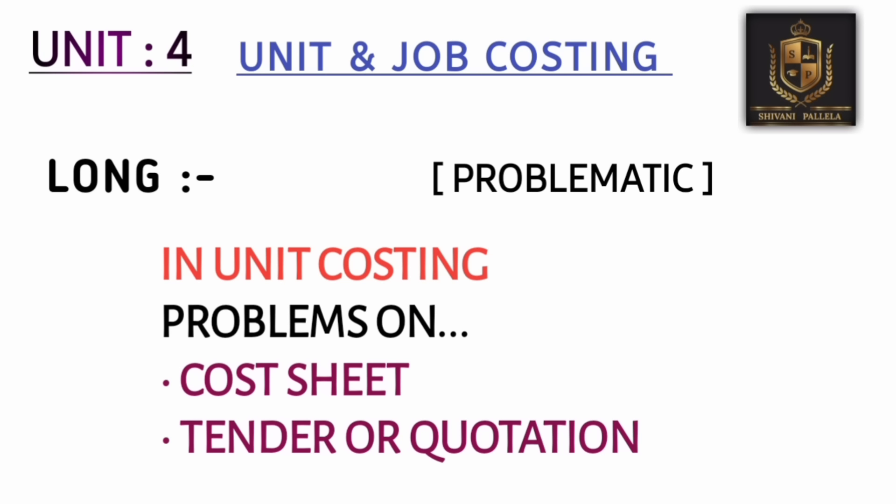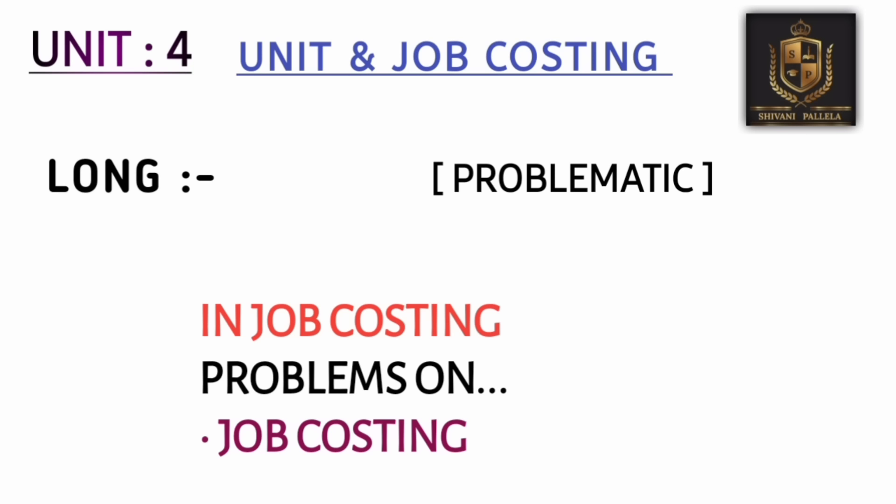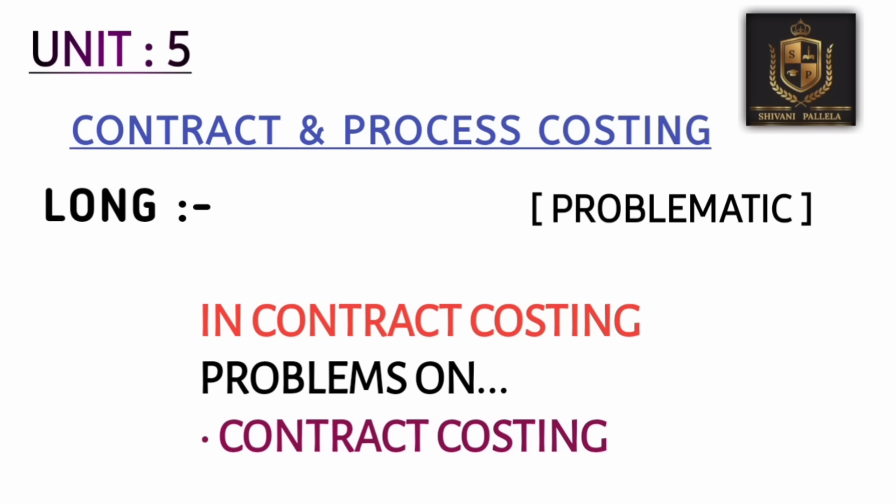In unit four, for the long answer from Unit Costing, you can expect a Cost Sheet or Tender/Quotation question as the problematic — this is the most important. Unit four has two chapters: Unit Costing and Job Costing. If you are perfect with Unit Costing, you will automatically understand Job Costing because they are interlinked. Compared to Job Costing, Unit Costing is more important. Many students find theory-only questions in Job Costing, so it's better to focus on Unit Costing.